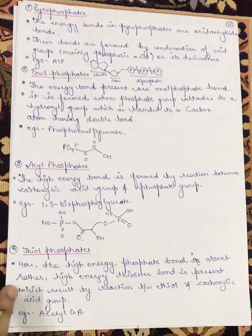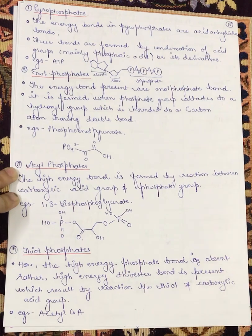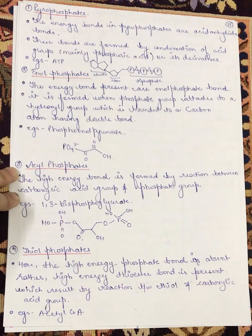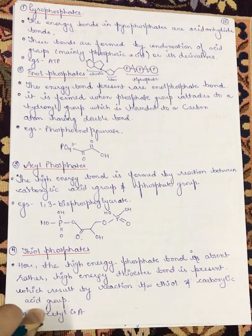First is pyrophosphates. The energy-rich bond in pyrophosphates is the acid-anhydride bond. These bonds are formed by condensation of acid groups and their derivatives like phosphoric acid. An example of pyrophosphates is ATP — adenosine triphosphate.